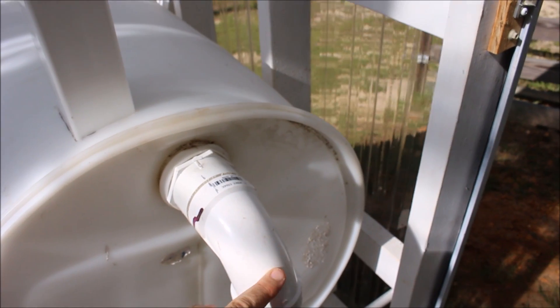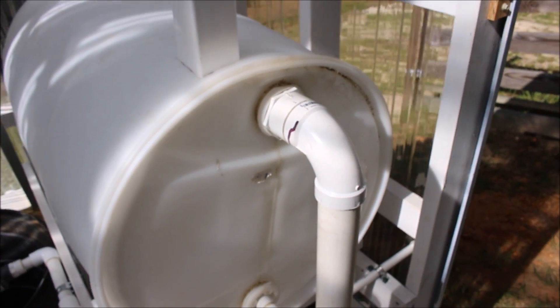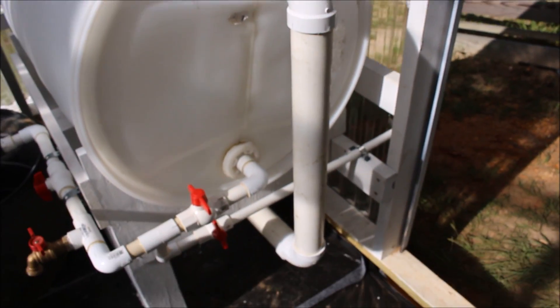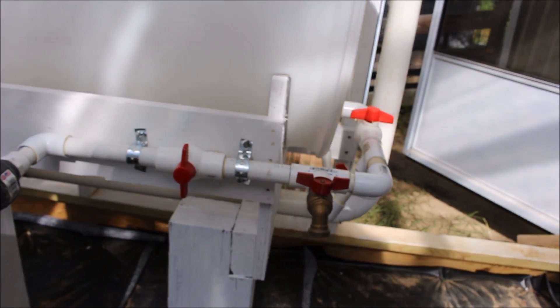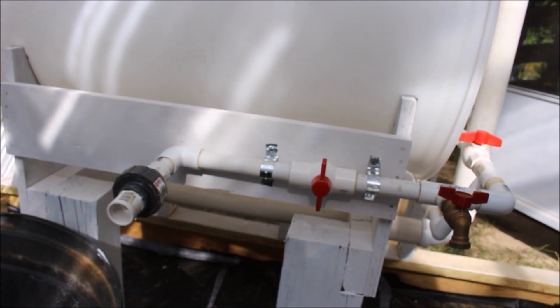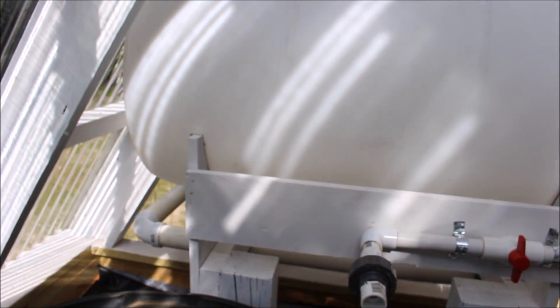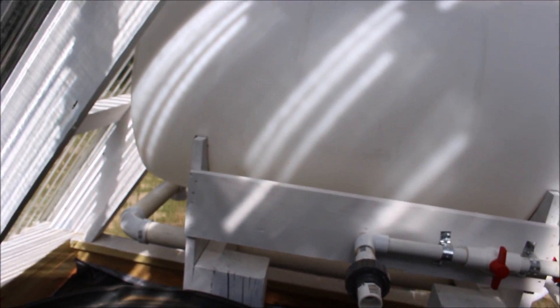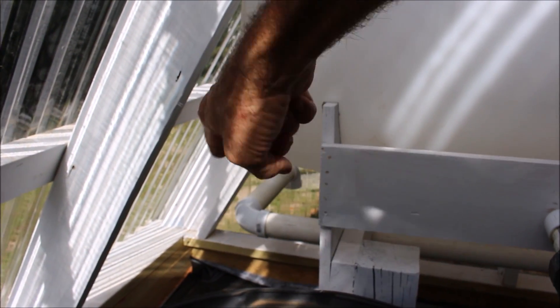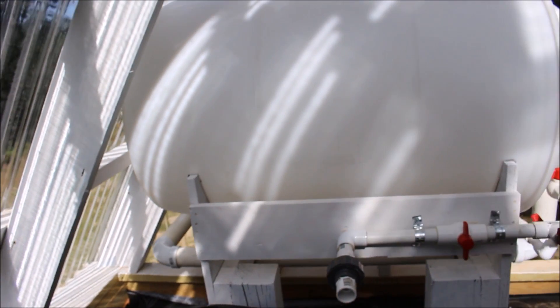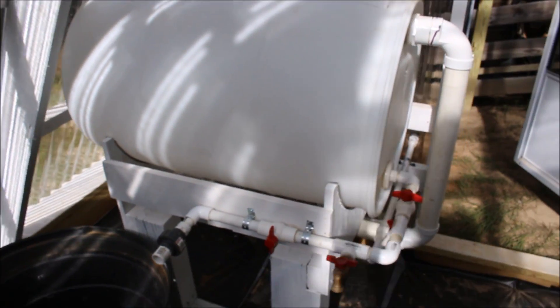This pipe here is the overflow. When it fills up, you see it comes down, it actually goes underneath it, goes all the way through the back and goes out. I'll get it where I can get back here. You can see it goes out back here and goes back outside the building and dumps back on the ground when the tank fills up during a rainstorm.